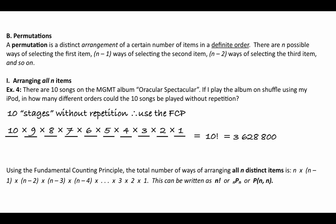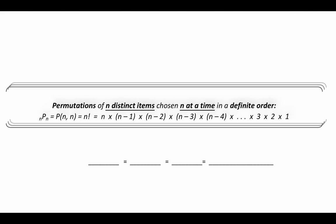There are two other ways to write this. If you want to arrange all n items, n factorial is all you need, but we can also write it as nPn — meaning n items being arranged into n spots — or as P(n, n), meaning the permutation of n items chosen n at a time. So for our example, 10 factorial equals 10P10 equals P(10, 10) — all three notations mean the same thing and give 3,628,800.